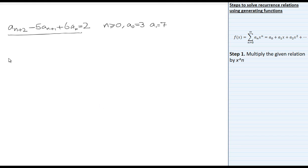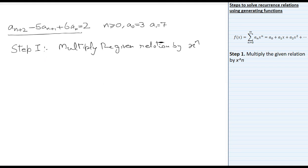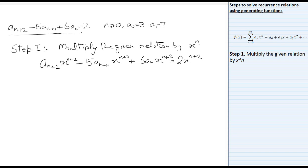Step 1 is to multiply the given relation by x raised to power n. So we will get: aₙ₊₂ · x^(n+2) − 5aₙ₊₁ · x^(n+2) + 6aₙ · x^(n+2) = 2x^(n+2). Here the power of x will match with the subscript.